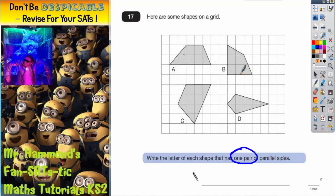And if you've revised your quadrilaterals, you should know that trapeziums have one pair of parallel sides. And shape A is a trapezium. So your one pair of parallel sides of shape A is those two sides.